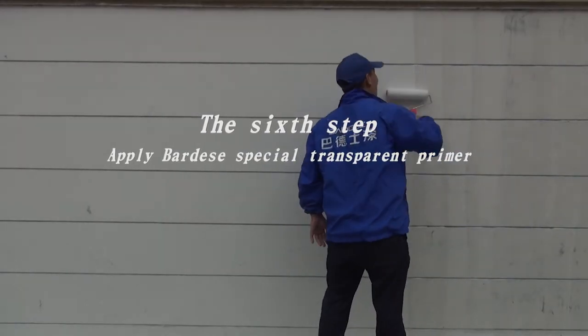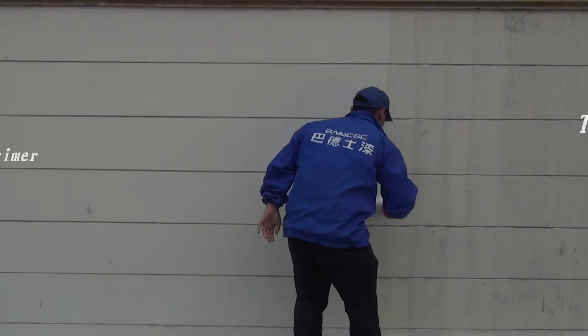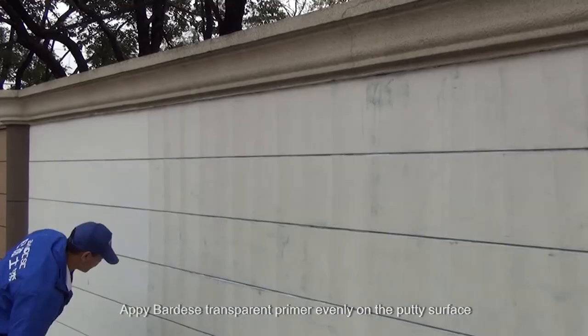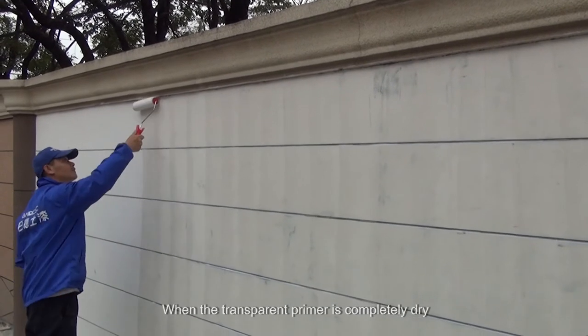Apply Bardese's transparent primer evenly on the putty surface. When the transparent primer is completely dry, the next step can be carried out.